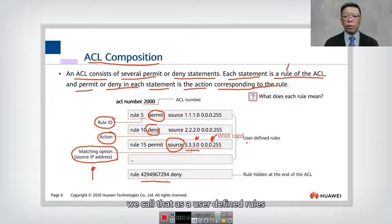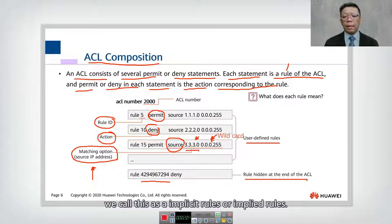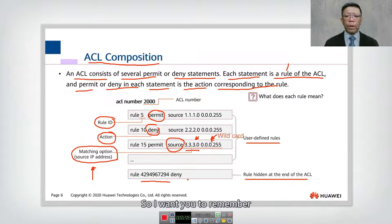we call that as user-defined rules. At the last, there is one rule that is hidden. We call this as an implicit rule or implied rules. So I want you to remember the rules of ACL. The composition of it is they have rules ID. They have the action. They have the matching option.